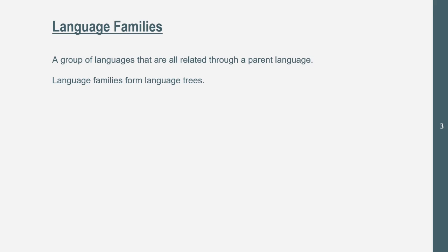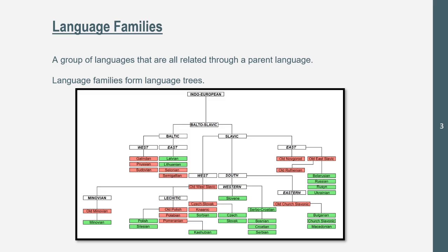Now let's get into language families, which is a group of languages that are all related through a parent language. Language families form a language tree — something like what you put together in biology or genetics class when making a family tree, but for languages. This language family shown here is Indo-European, and then we have our language branches: Slavic, Romance, Baltic, and others.